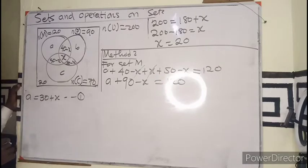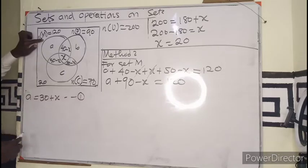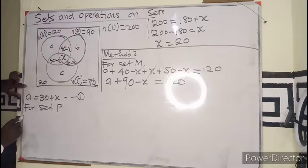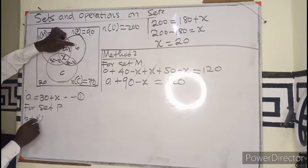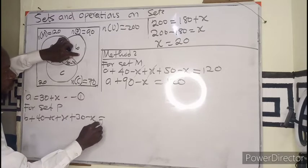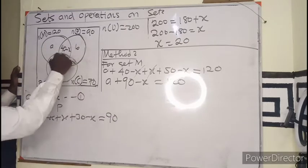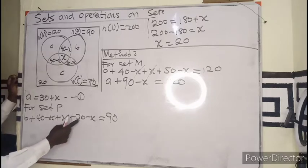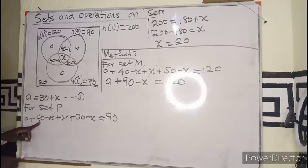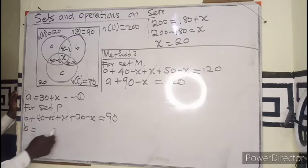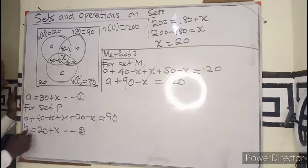For set P: B plus (40 minus X) plus X plus (30 minus X) equals 90. Simplifying, B plus 70 minus X equals 90, so B equals 20 plus X. That is equation 2.